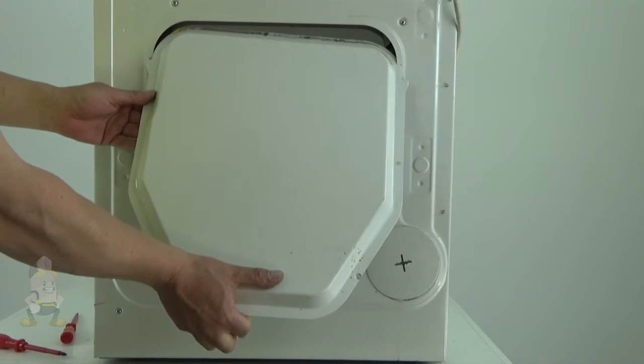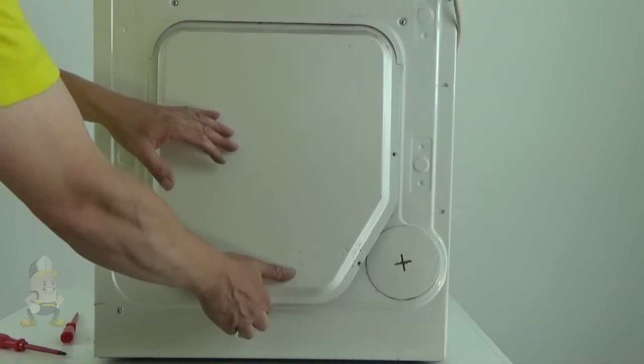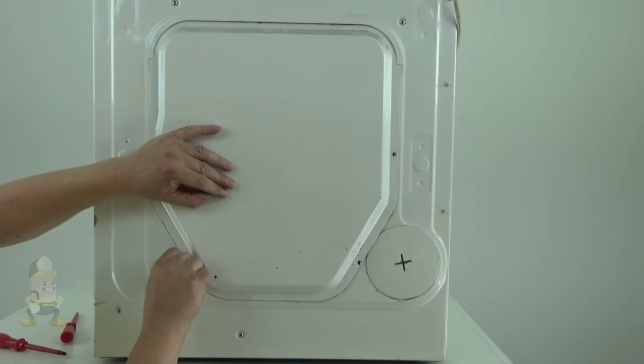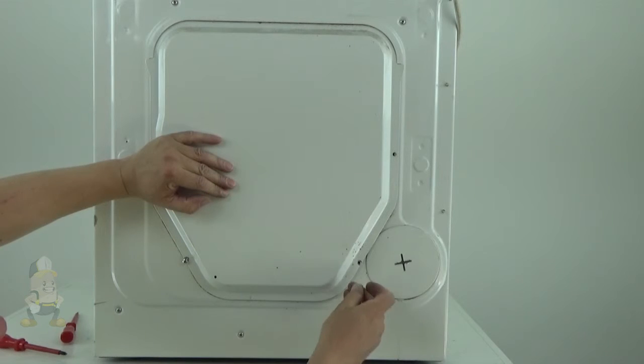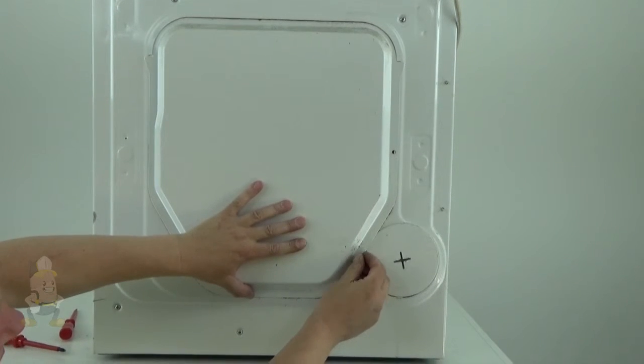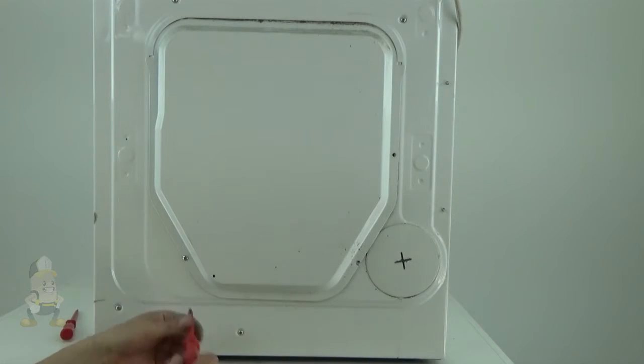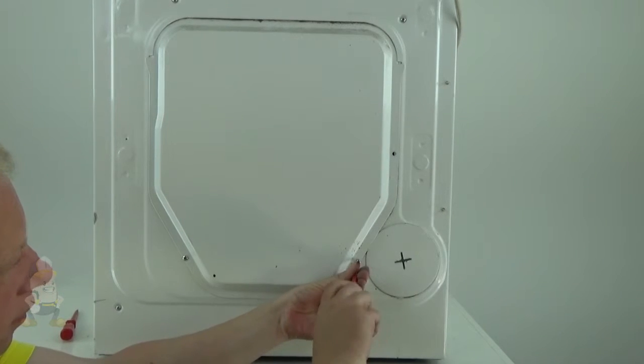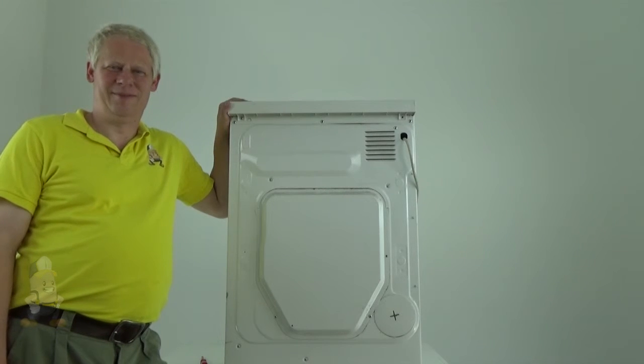The rear panel can now be reattached, secured with the screws. This is how to replace the heating element of your dryer.